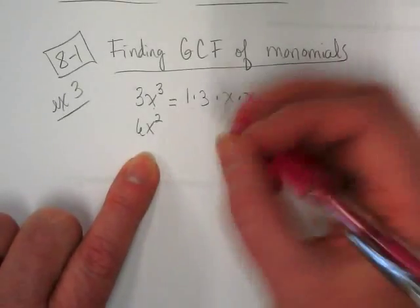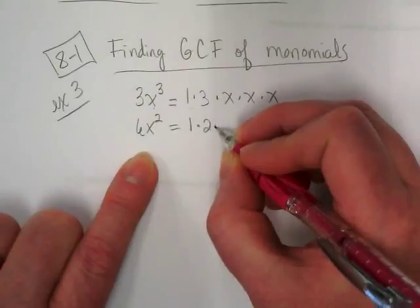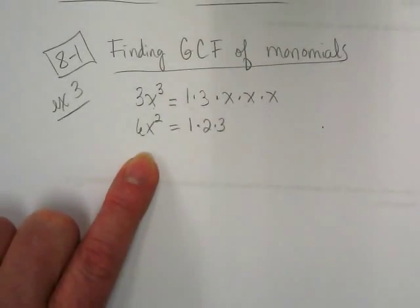Now what do you guys think we should do for the 6? 1 times 2 times 3, because 2 times 3 is 6 times 1. Remember, we want to show the positive one, because sometimes we're going to have a negative 1, and it helps to just get in that habit of showing that there's always a 1.